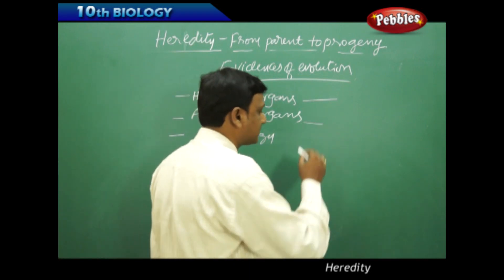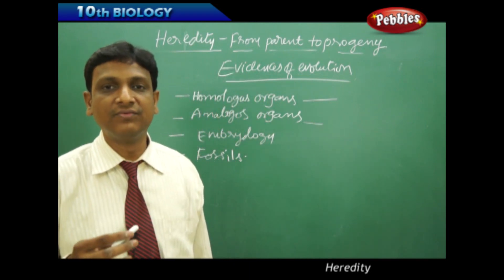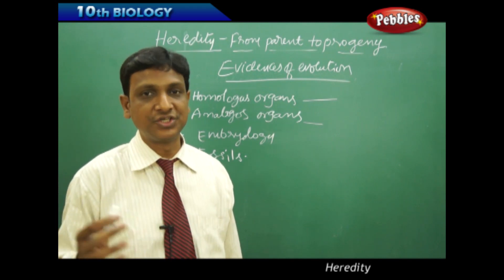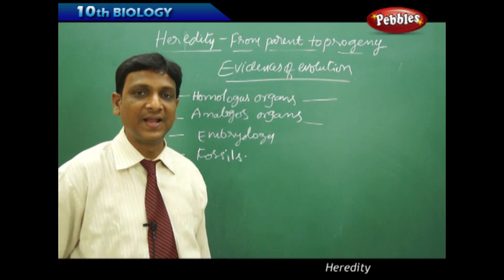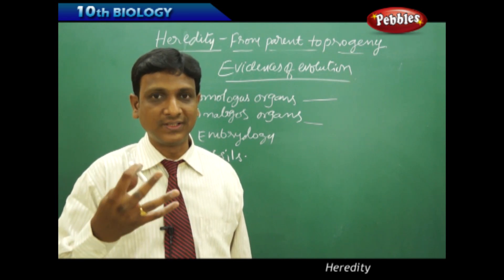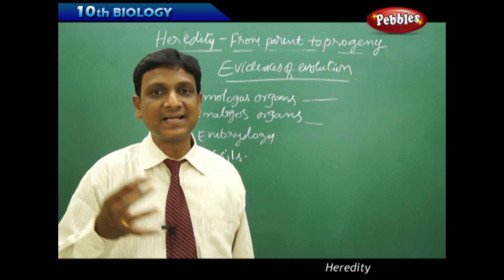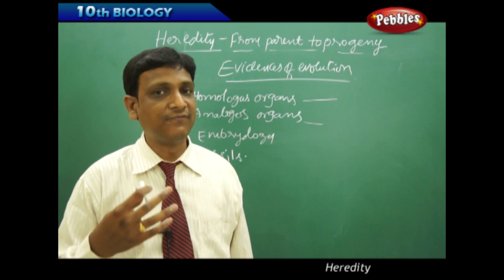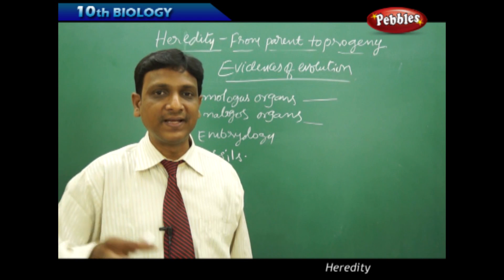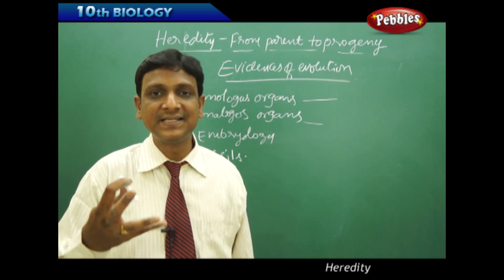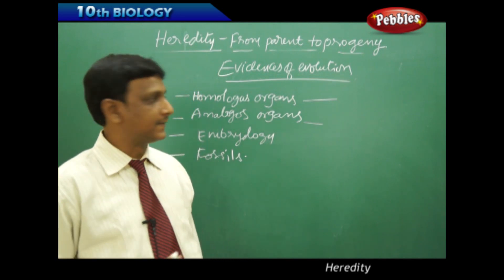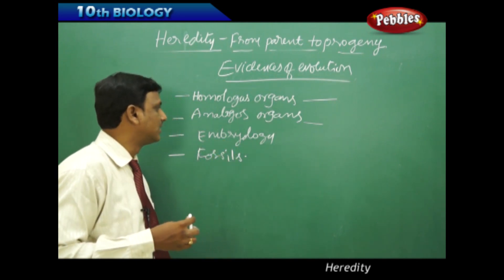Now let us see the analogous organs. If you see the wing of a bat and the wing of a bird — both have the same function of flying, but their internal anatomy is different. The bat has expanded skin as a wing, whereas in the case of birds they have feathers as wings. A bat's flight is based on a thin fold of skin between its fingers, whereas a bird's flight is based on feathers. Those are called analogous organs.